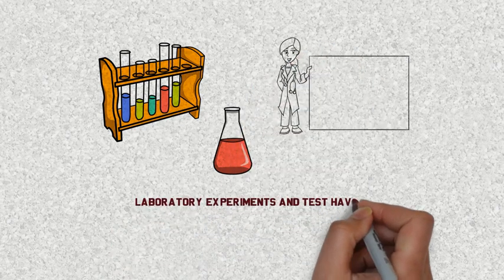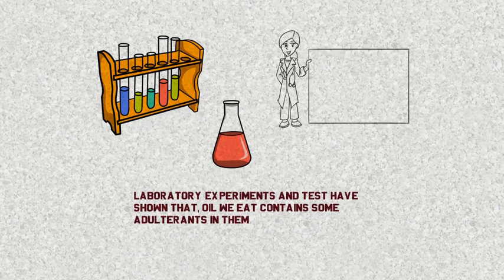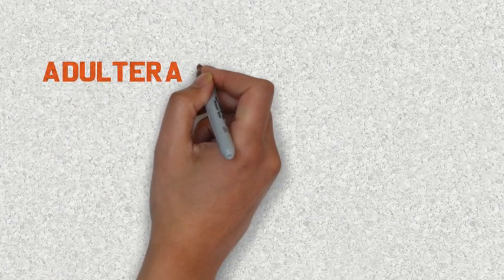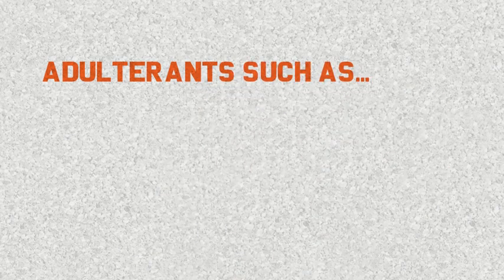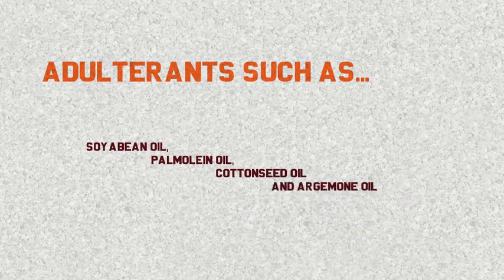Laboratory experiments and tests have shown that oil we eat contains some adulterants in them. Adulterants such as soybean oil, pulmonic oil, cottonseed oil, and argymine oil.